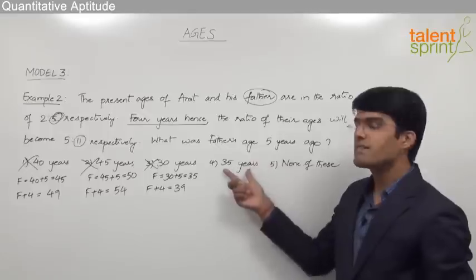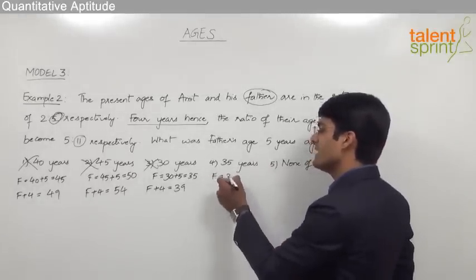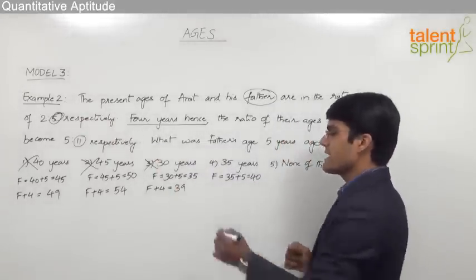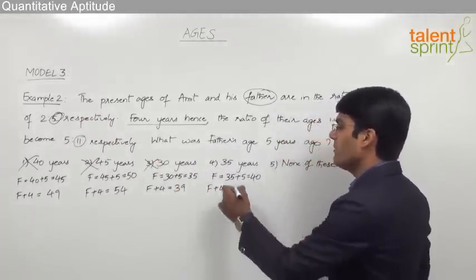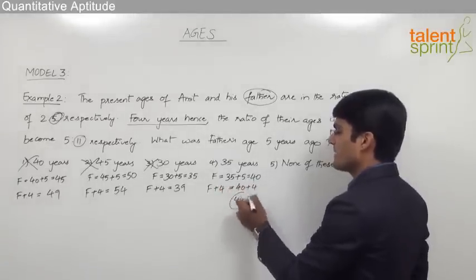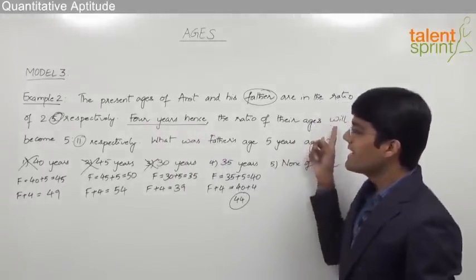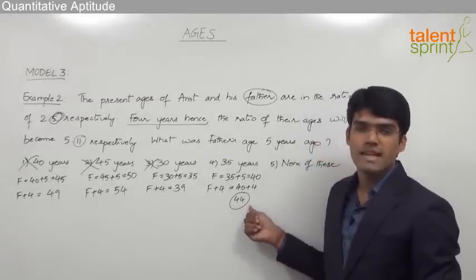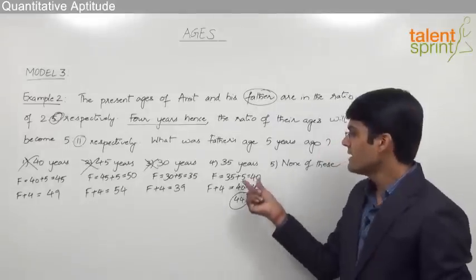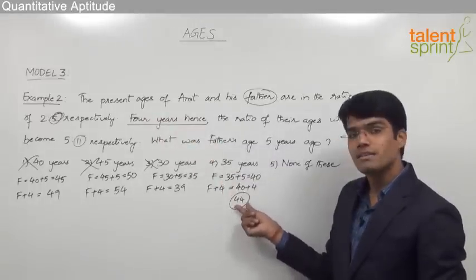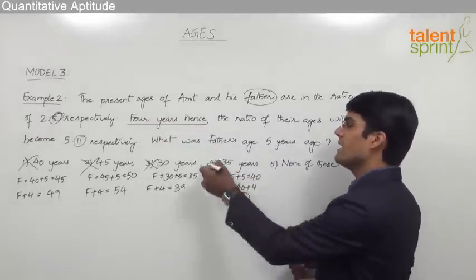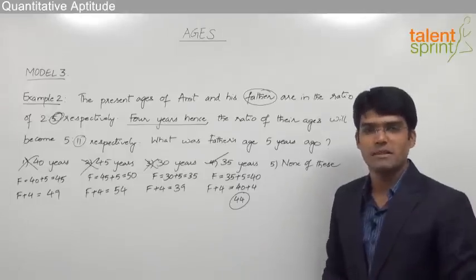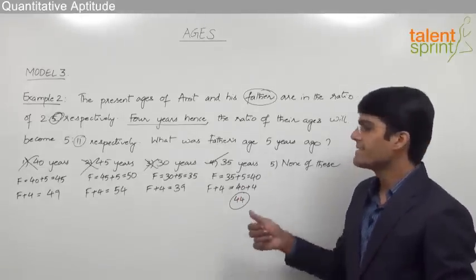For option four, father's age 5 years ago was 35, so father's present age is 35 plus 5 equals 40. Since 40 is a multiple of 5, the first condition is satisfied. Father's age four years hence will be 40 plus 4 equals 44, and 44 is a multiple of 11 — so the second condition is also satisfied. This option satisfies both conditions, so option four is the correct answer. This is how you can work smartly, eliminate wrong answers, and verify the correct one without writing down all the steps.